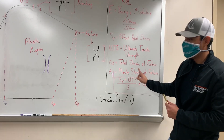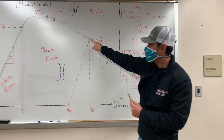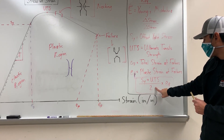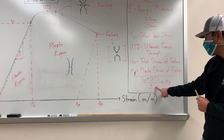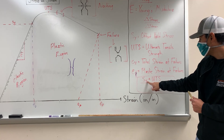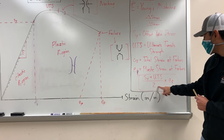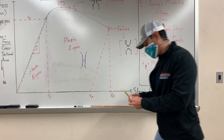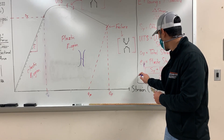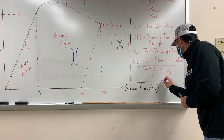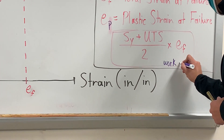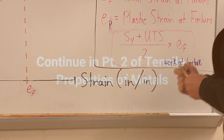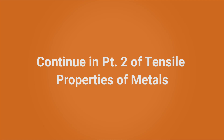Plastic strain at failure is an offset to our total strain at failure, obtained from the x-axis. The fracture work energy equation is: offset yield strength plus ultimate tensile strength, divided by two, times total strain at failure — which gives us the work at fracture.